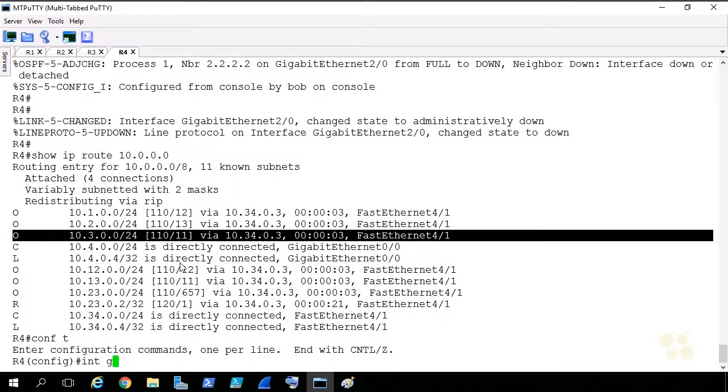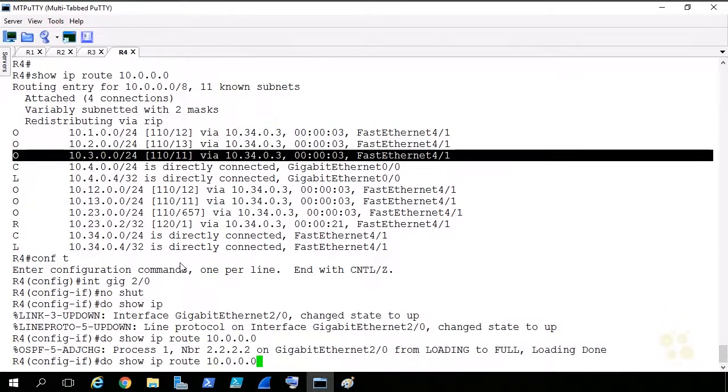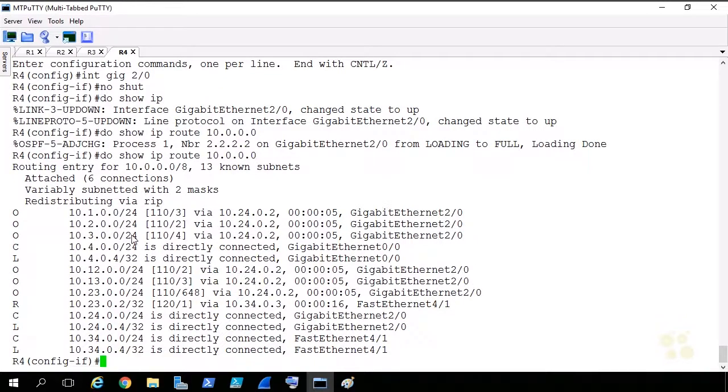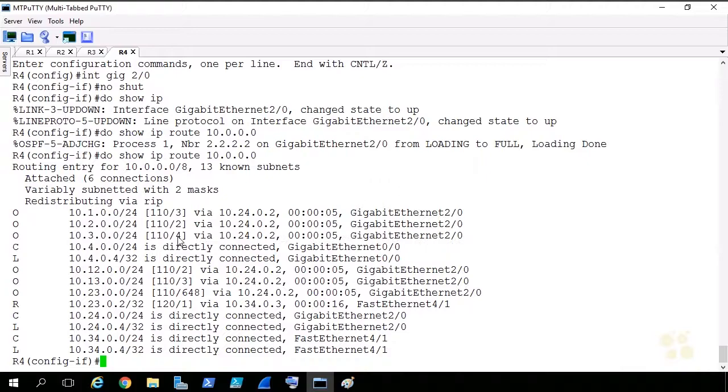If we went back in, went into interface Gig 2.0, and did a no shutdown, and then we did a do show IP route for the 10 network, and we might need to wait just for a moment. There we go for our adjacency to come up with our neighbor there, and press enter. Once again, we're now going out the Gig 2.0 interface with our next hop of 10.24.0.2, and there's our OSPF learned route because the cost is better. A cost of 4 is way better than a cost of 11. So when it comes to choosing which route goes in the winner's table, the routing table on a Cisco router, the lowest AD wins. If there's a tie there, we have more than one route with the same AD, the next tiebreaker is cost, or the metric. And again, the lower is better with both of those.